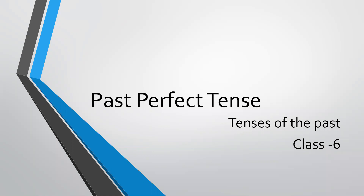As you already know, tenses are the forms taken by a verb to show the time of an action or the state of an event. The past tense expresses an action or situation that started and finished in the past. Previously in your class you learned about past indefinite tense and past continuous tense, and today we will learn and also practice a few sentences in past perfect tense.